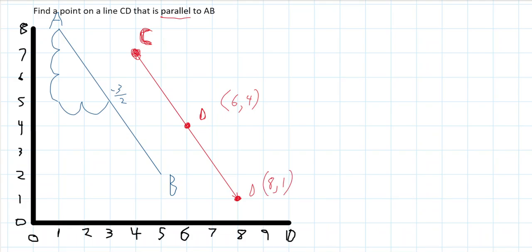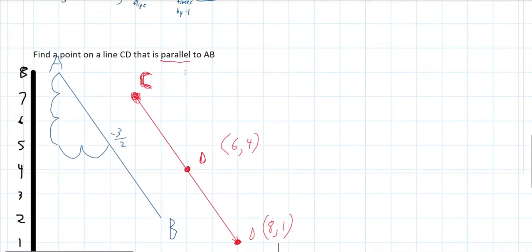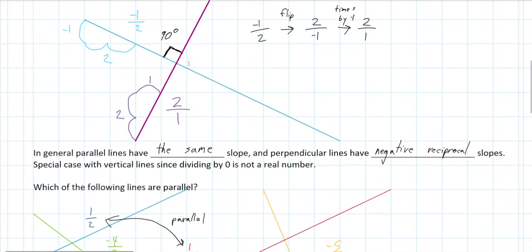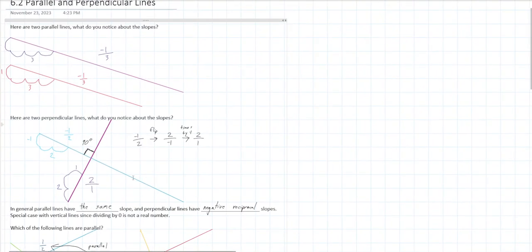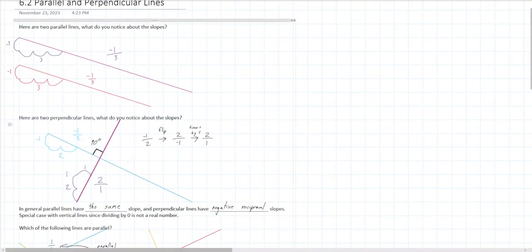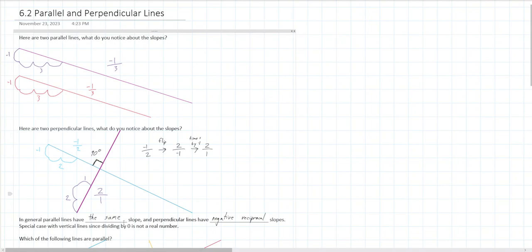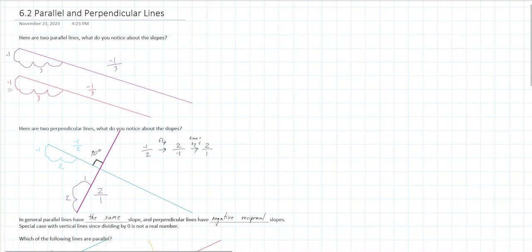I hope this video helps you better understand parallel and perpendicular lines. Basically, parallel lines have the same slope as each other, and perpendicular lines have a negative reciprocal slope. I hope this video helped — good luck!